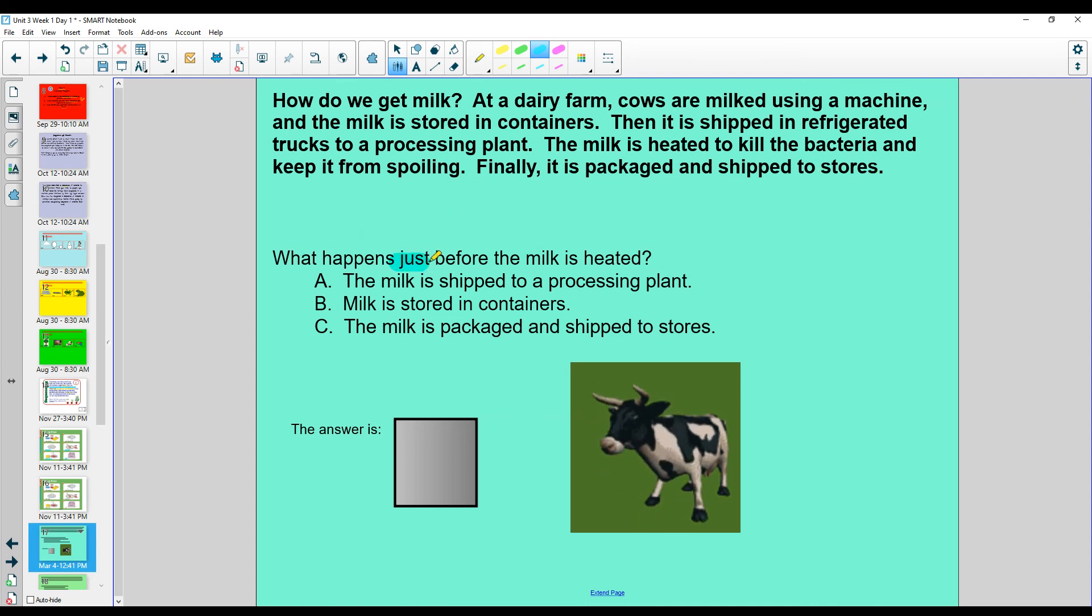What happens just before the milk is heated? Okay, let's find where the milk is heated. The milk is heated. Okay, what happens before that? It is shipped in refrigerated trucks to processing plants. So, what letter is that? Yes, A. Do you see how we can go back to a text to verify our answer?